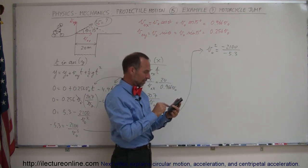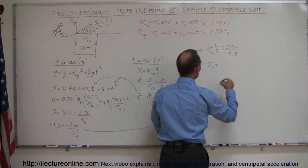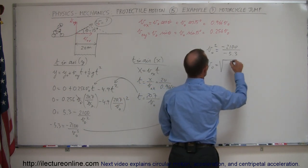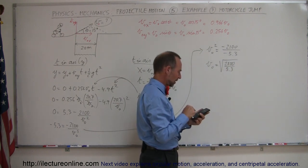And then of course we're taking the square root of both sides, the square root of 2100 divided by 5.3, take the square root and we get 19.9. V initial equals 19.9, of course the units are meters per second.